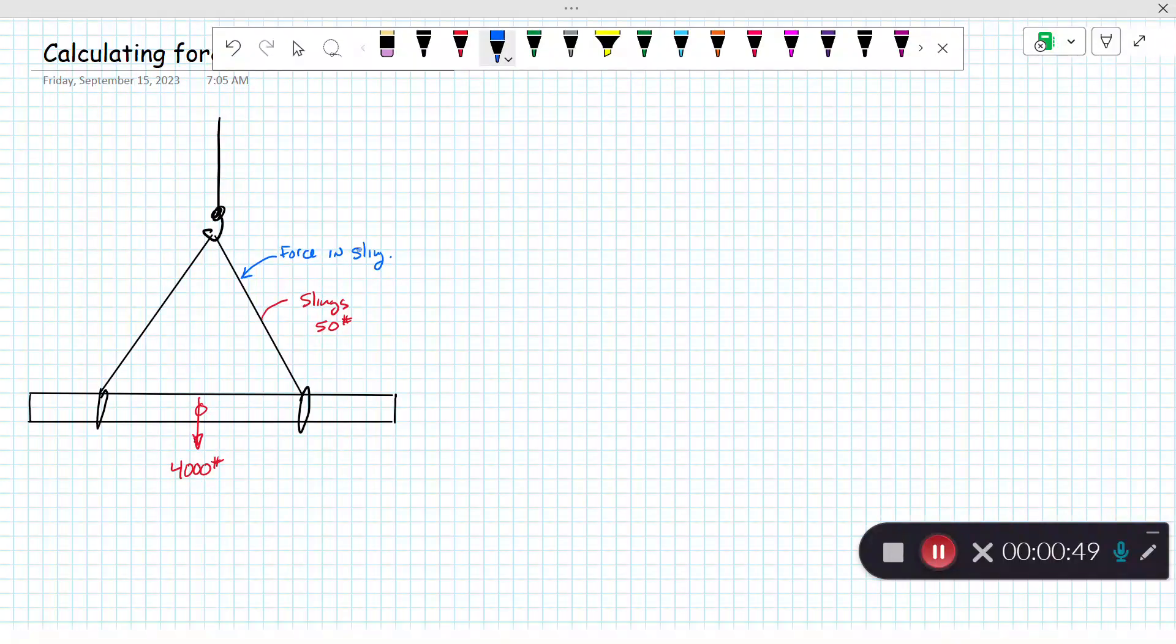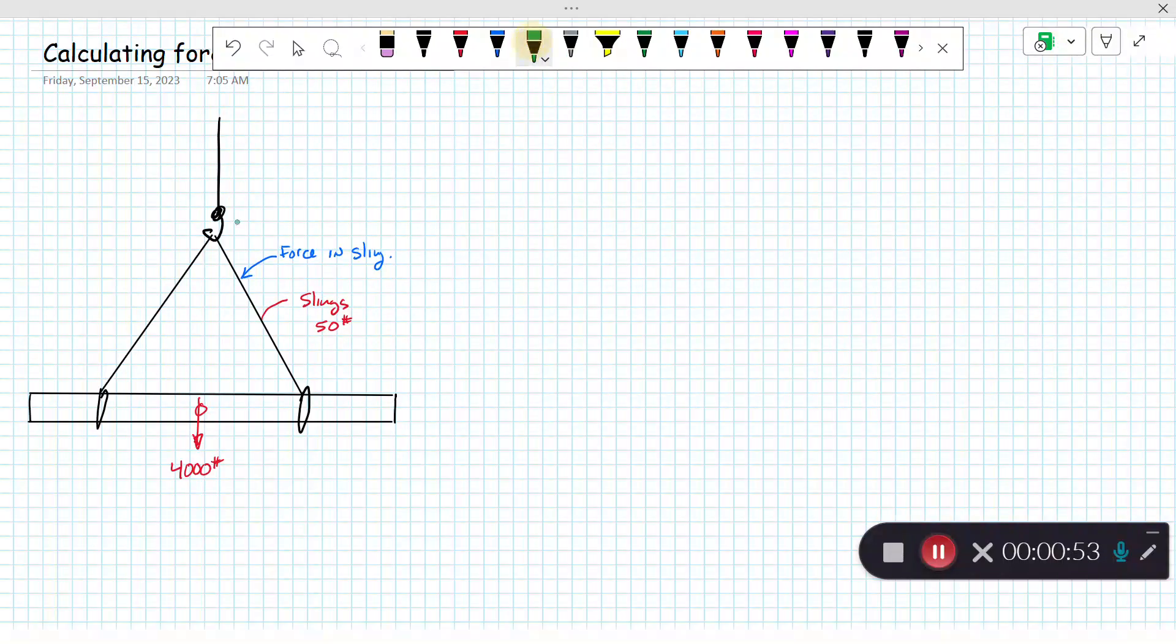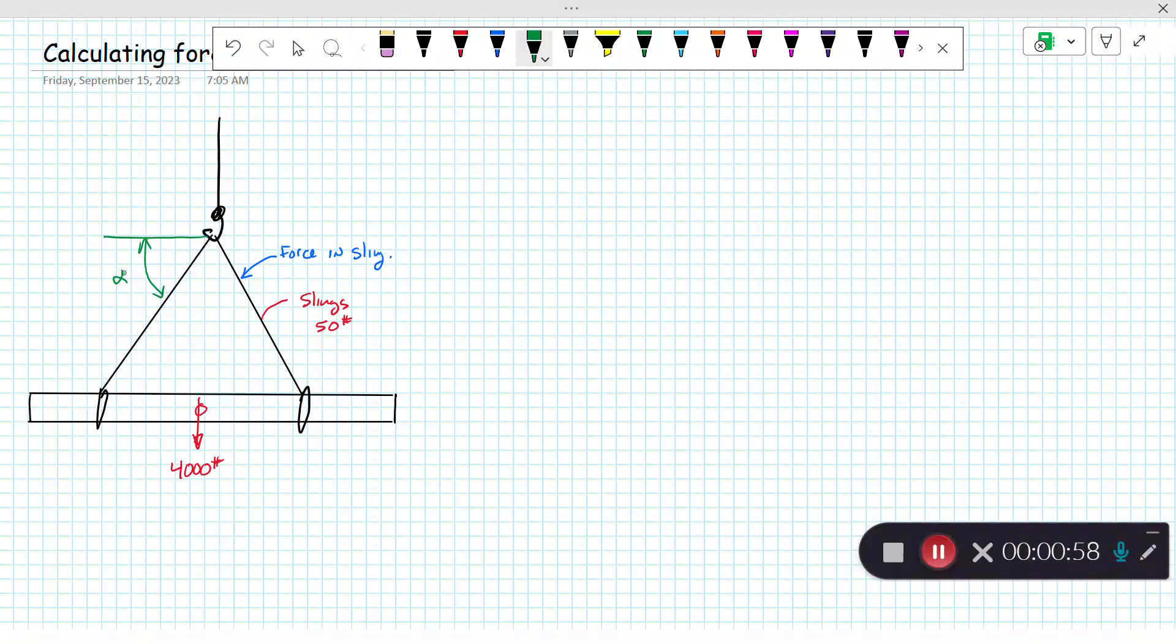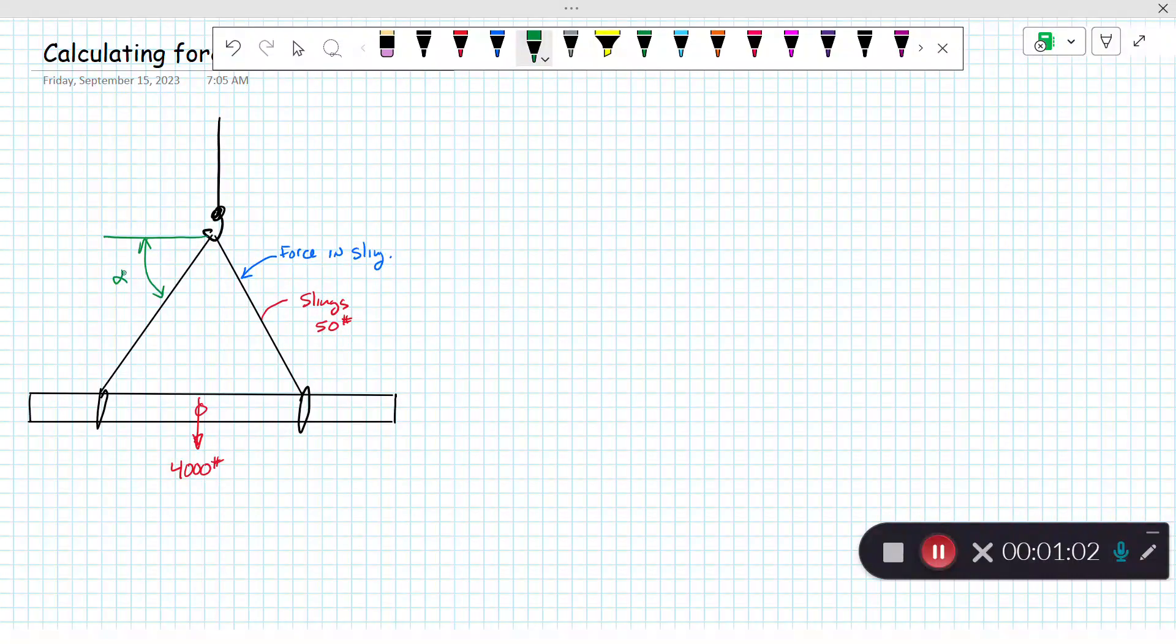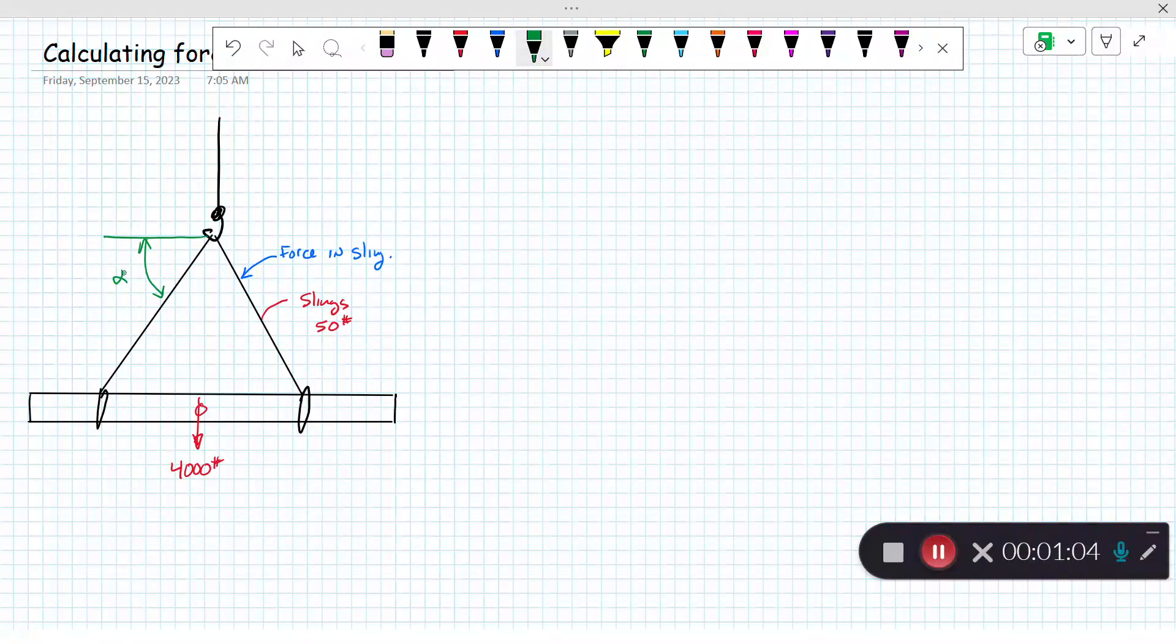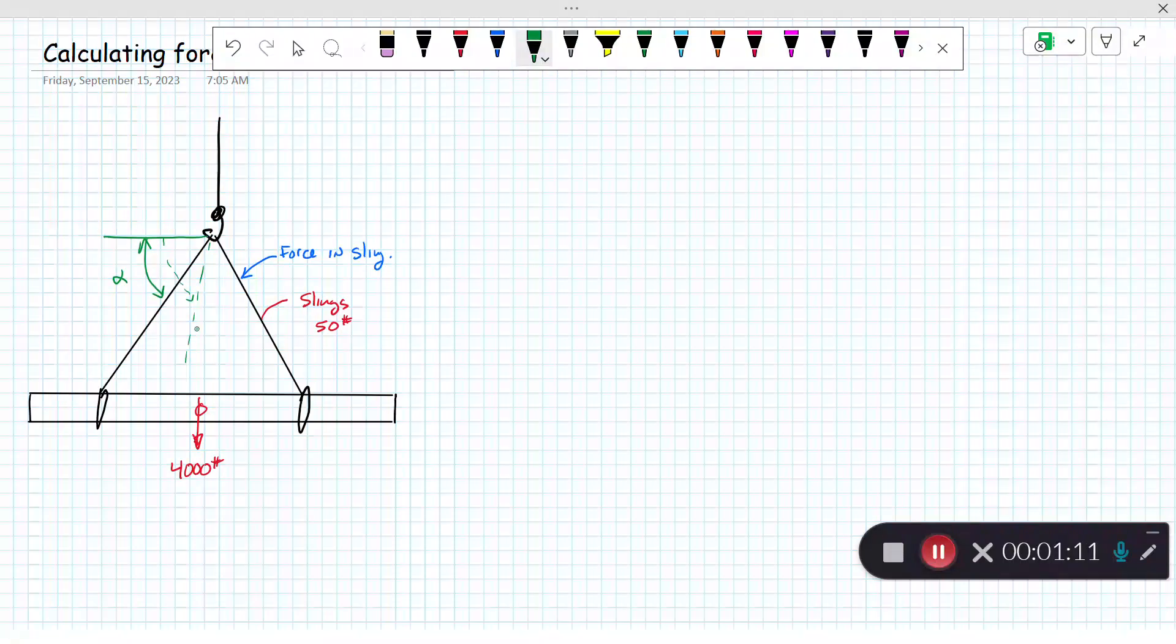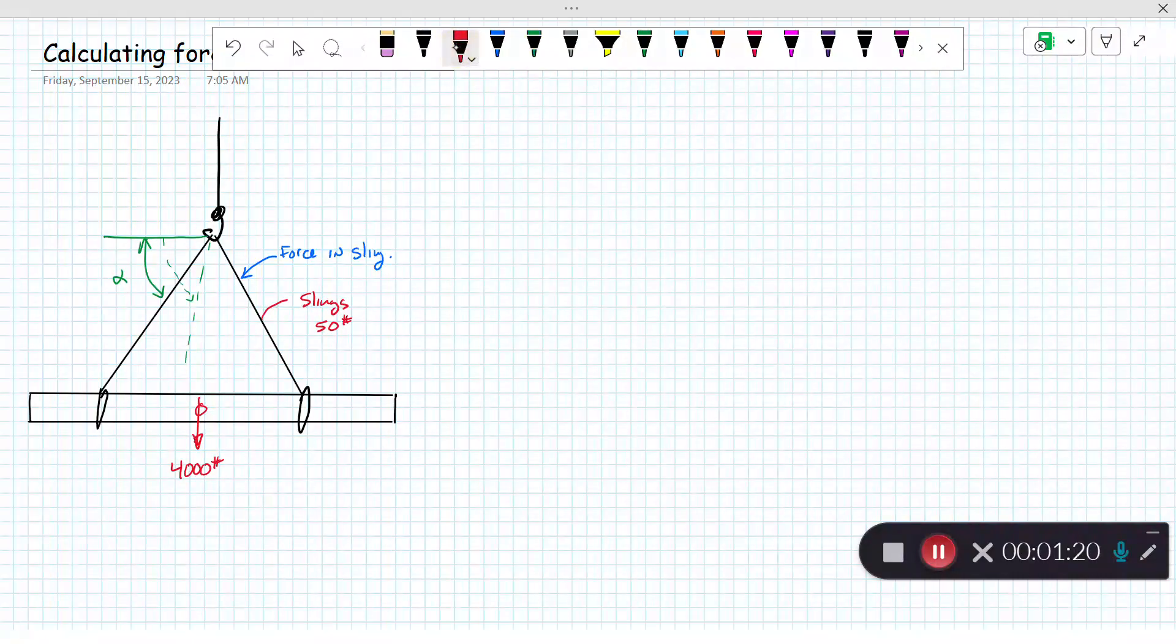Looking at it, if it's symmetrical each sling will take about half the load. The problem is when they're at an angle like this, those forces get magnified. The wider the angle is, the smaller the force will be. As I make the angle smaller and they're spread out, the force will get larger.